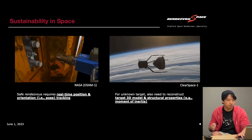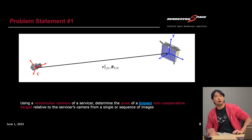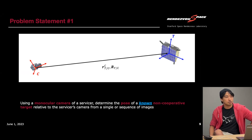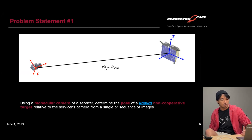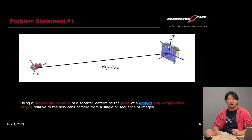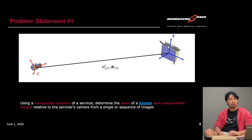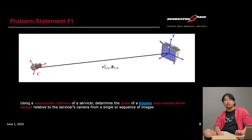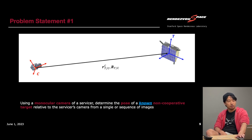All of these require precise navigation capability about the target, preferably autonomously, so that it can service multiple targets in one mission. We want to use a vision-based system such as a camera because of its low cost and low SWaP. The problem statement we've been working on is using a monocular camera on a servicer to determine the pose — position and orientation — of a non-cooperative target relative to the servicer's camera from a single or sequence of images.